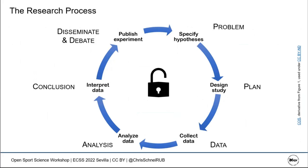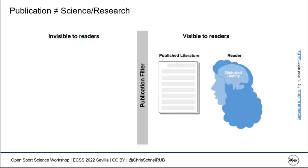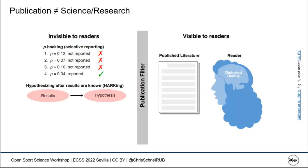Not all conducted research gets published, so the literature is not a full representation of what happened. Things invisible to readers include selective reporting of significant results only — some journals even explicitly encourage this — and hypothesizing after results are known, which distorts the original idea of hypothesis-driven research.